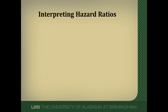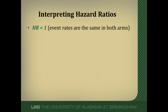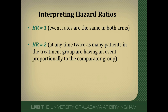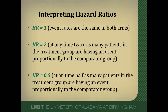So how do we interpret hazard ratios? Because it's a ratio, if the hazard ratio is one, it means event rates are the same in both arms at any given particular time. A hazard ratio of two means at any particular time, twice as many patients in the treatment group are having an event proportionally to the comparator group. And a hazard ratio of 0.5 means at any particular time, half as many patients in the treatment group are experiencing an event proportionally to the comparator group.